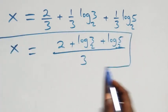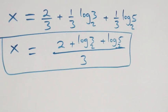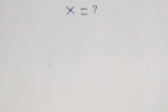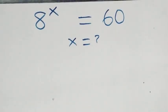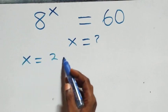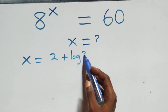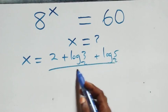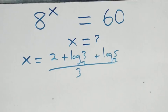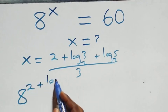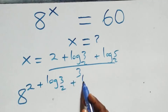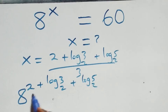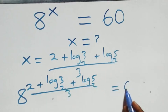So we have the value of x equals to two plus log three base two plus log five base two, all over three. We verify: eight raised to power that quantity equals to sixty on the right-hand side.